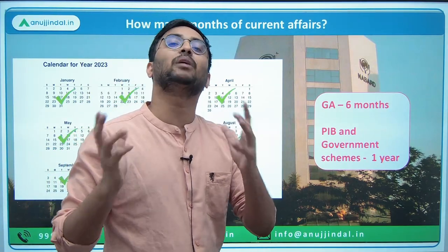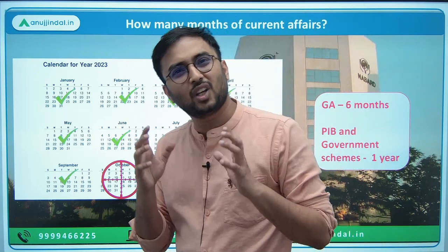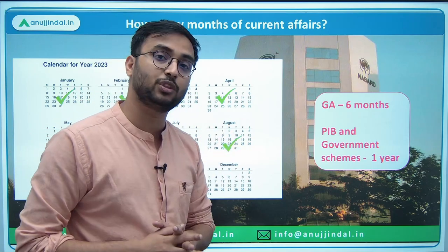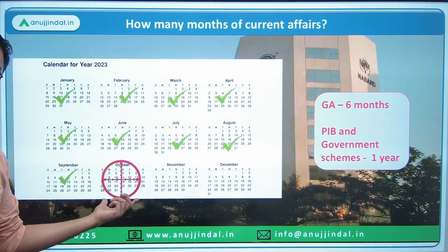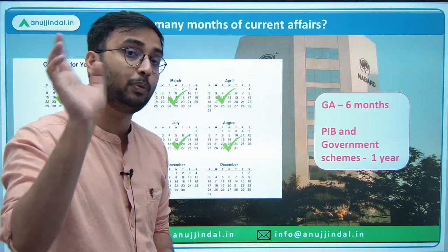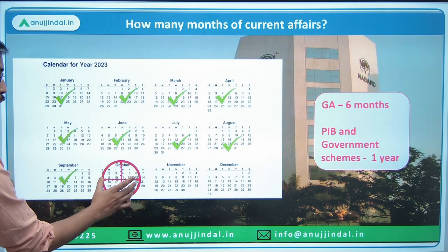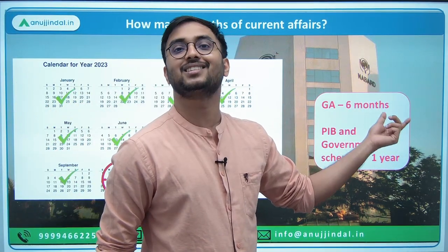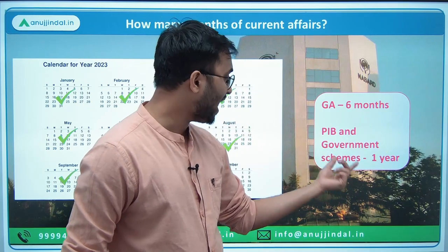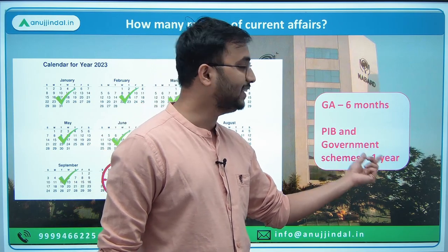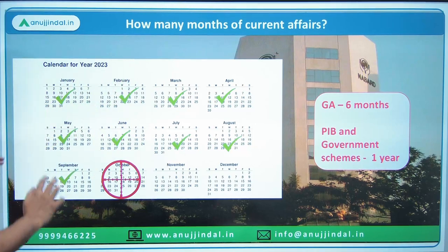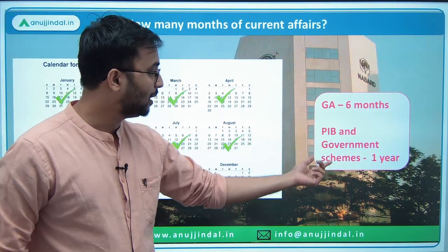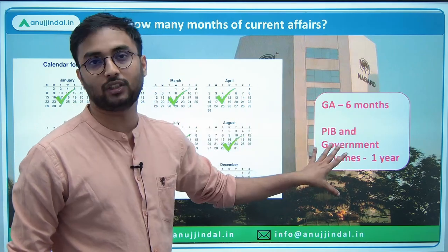Before jumping to subjects, we need to know how many months of current affairs preparation is required. If we assume the NABARD exam is in October, then General Awareness of the prior six months is the minimum period you need to prepare. Also, PIB and government schemes for a minimum of one year must be covered. So September, August, July, June, May, April, March, February, January — the last six months of GA and last one year of PIB and government schemes are important.